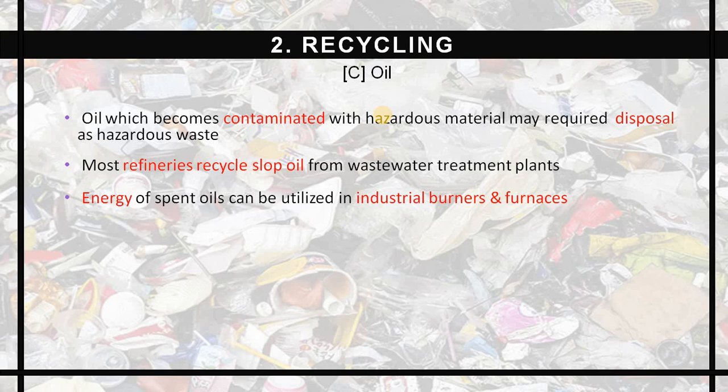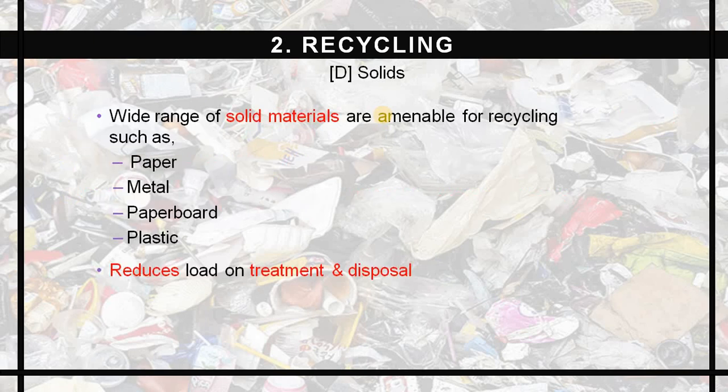Contaminated oil from many companies should be avoided from disposal in rivers. Instead, it can be sent directly to a refinery treatment plant where the oil can be reused and recycled. The energy from spent oil can be utilized in industrial burners and furnaces. A wider range of solid materials such as paper, metal, paperboards, and plastics can be recycled, reducing the load on the treatment plant.